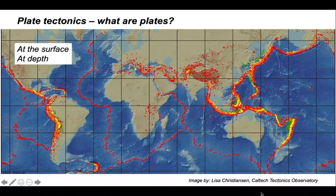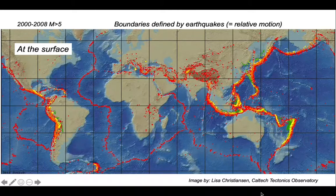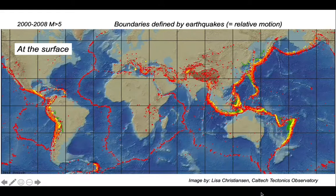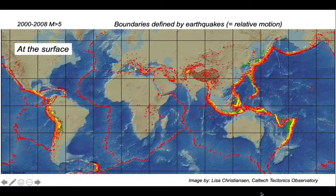This map shows the distribution of earthquakes. The record is only 8 years and it shows magnitude 5 and higher. The red dots are the ones we're interested in — these have occurred in the top 50 kilometres. These earthquakes are recording relative motion on faults, so this map tells us where active faults are.